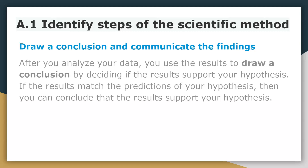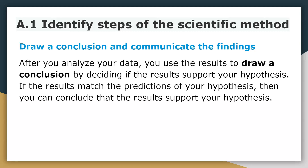Step five is drawing a conclusion. After you analyze your data, you use the results to draw a conclusion by deciding if the results support your hypothesis. If the results match the predictions of your hypothesis, then you can conclude that the results support your hypothesis. Basically, you got your data — now you're figuring out what that data is telling you.